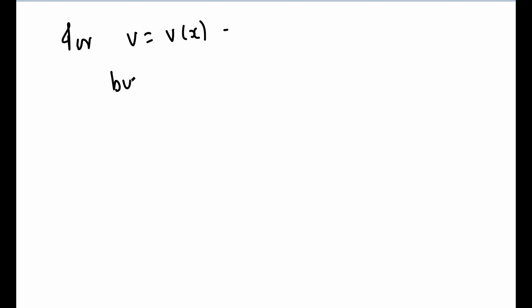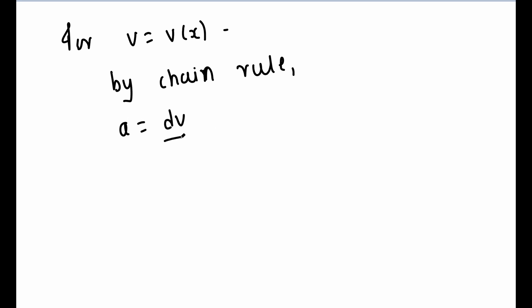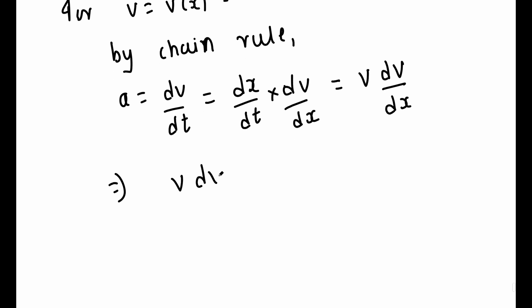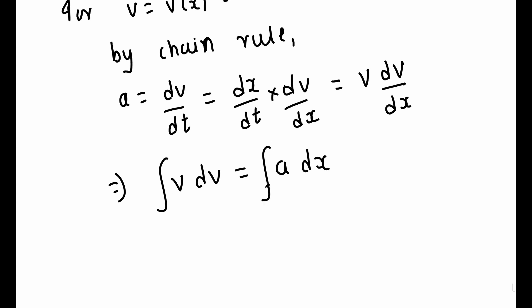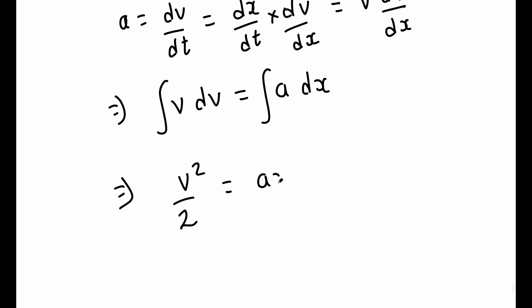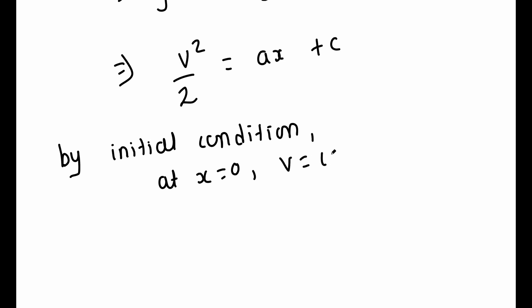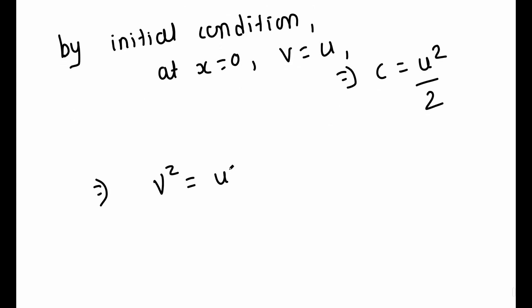Another equation we can derive is the variation of velocity with position. For that, we use the chain rule of derivatives and express velocity as a function of position x. So with A = dv/dt and using the chain rule, we write A = (dx/dt)·(dv/dx) = v·(dv/dx). Integrating both sides gives v²/2 = A·x + C. Applying the initial condition that at x = 0, v = u, we get C = u²/2. The final equation is v² = u² + 2A·x.